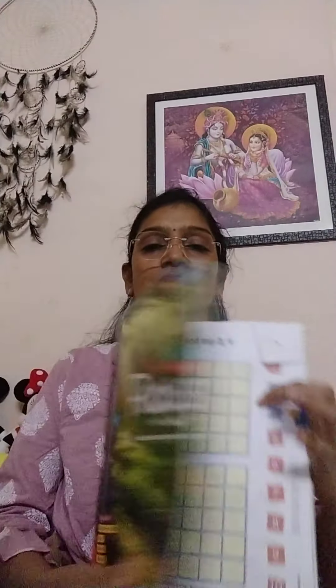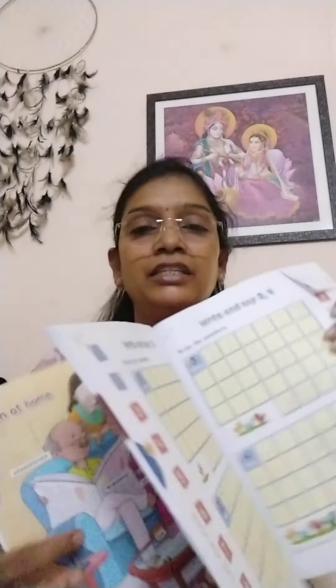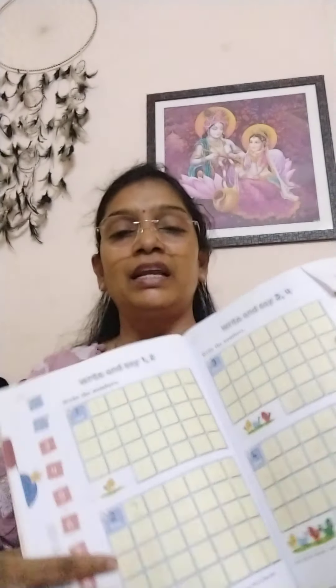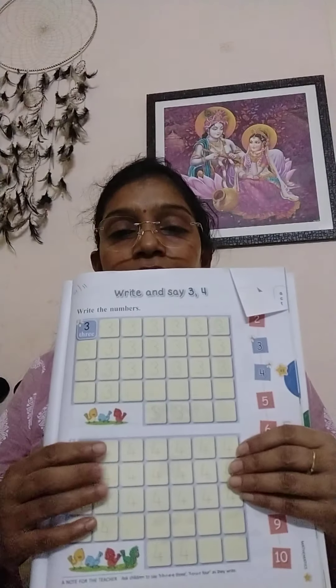Yesterday we have learnt numbers 1 and 2 children in the maths, previous class children. In the maths book, this is your textbook and this is the page number completed — 1 and 2 we have completed.